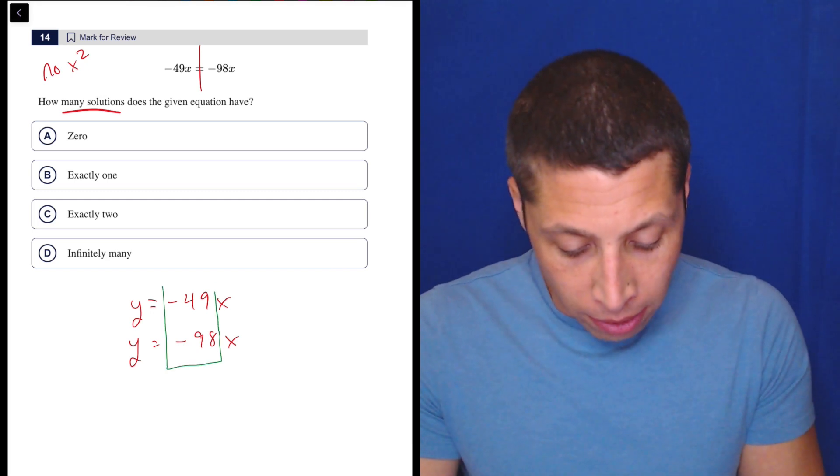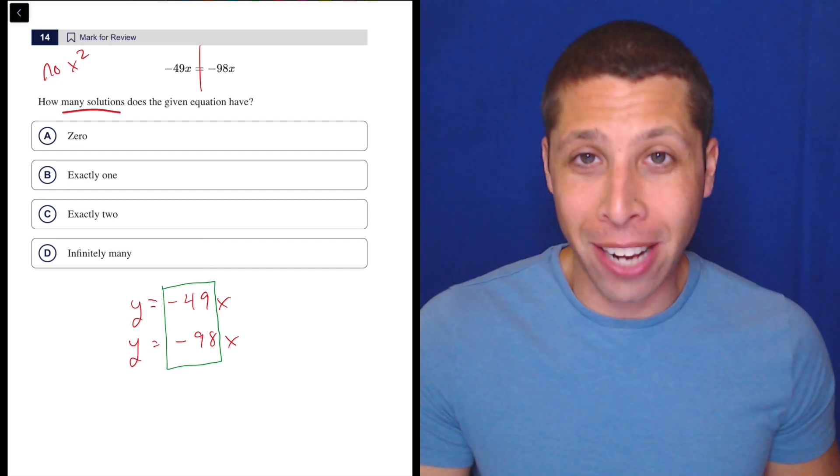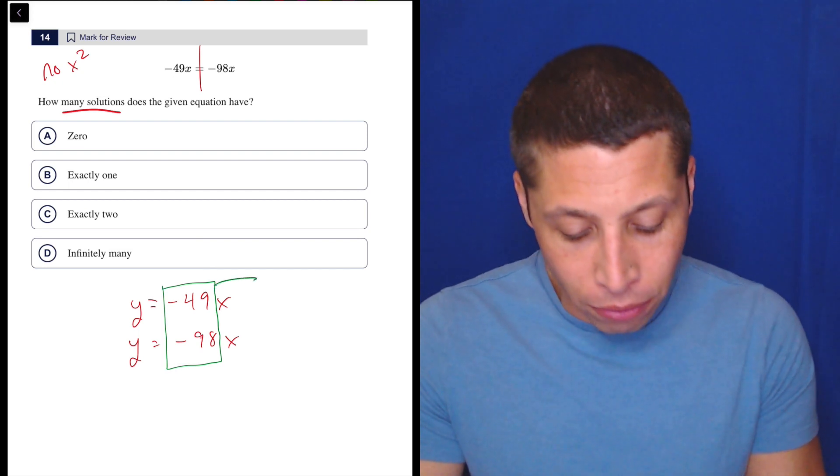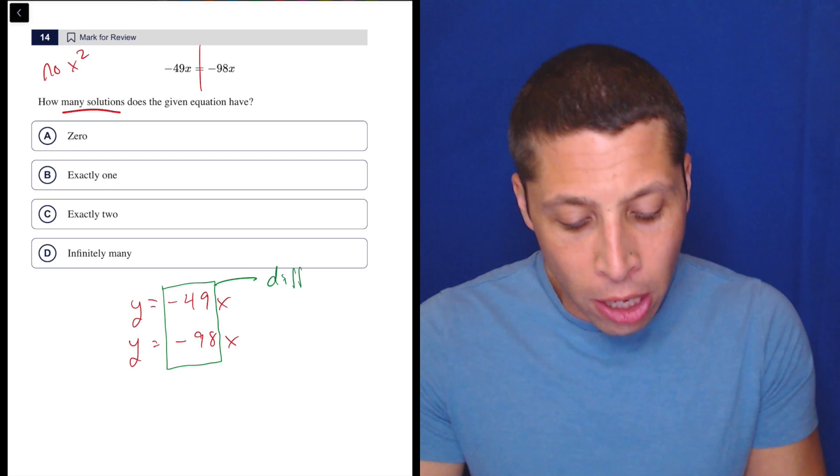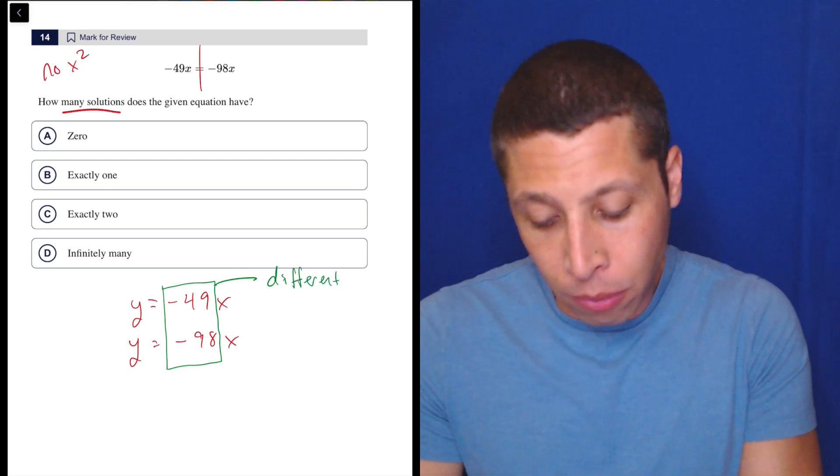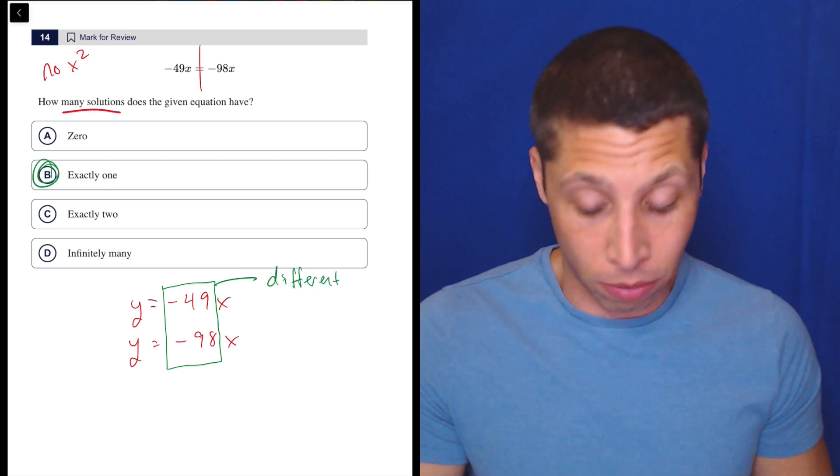That's all I really got is that it's the number attached to the x. And because they are different slopes, I know that I only have or I have one solution. So exactly one.